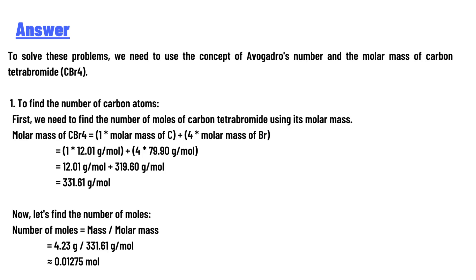To solve this problem we need to use the concept of Avogadro's number and the molar mass of carbon tetrabromide. First we need to find the number of moles of CBr₄ using its molar mass. Molar mass of CBr₄ is equal to 1 times the molar mass of C plus 4 times the molar mass of Br, which equals 1 multiplied by 12.01 g/mol plus 4 multiplied by 79.90 g/mol.